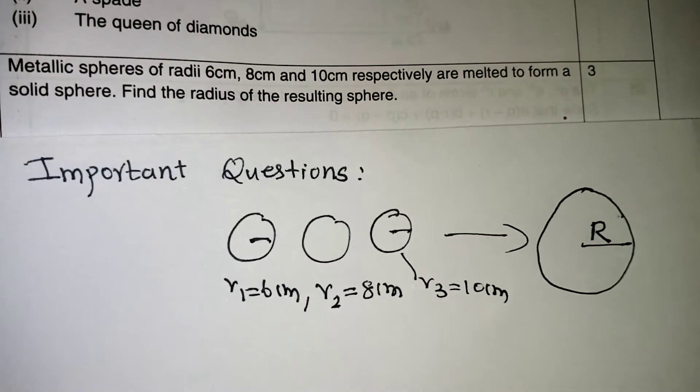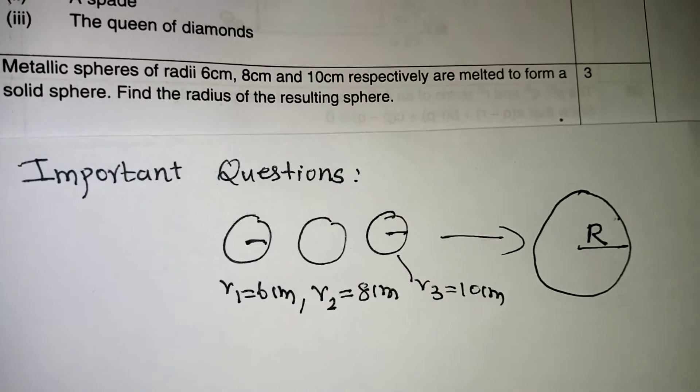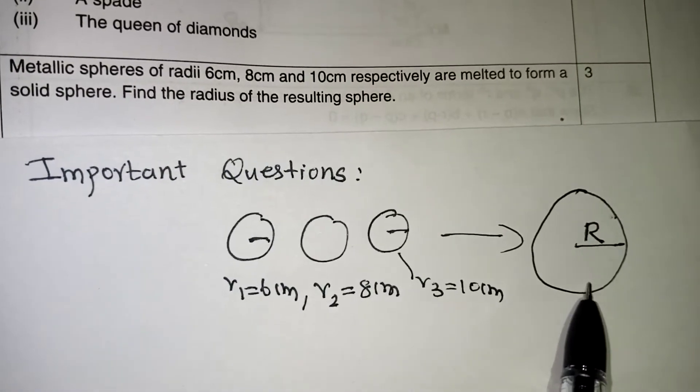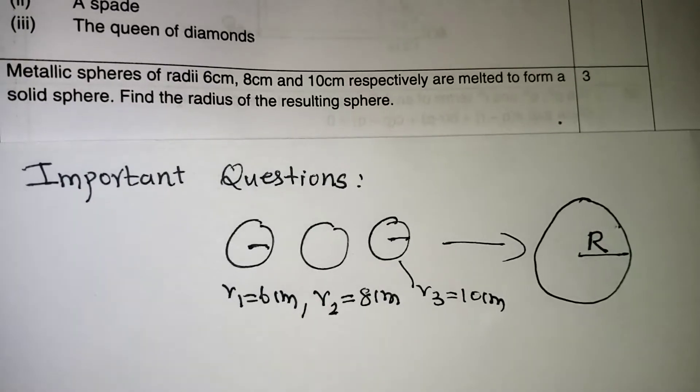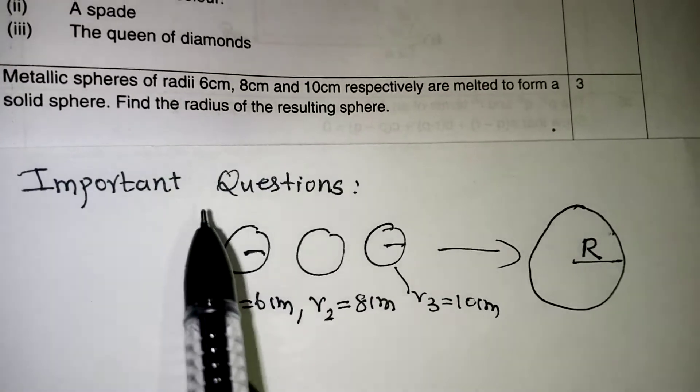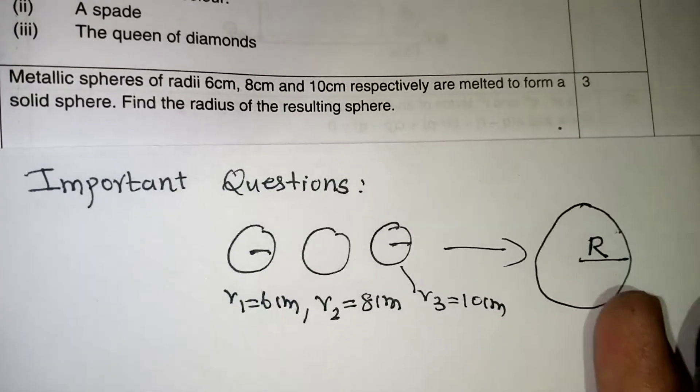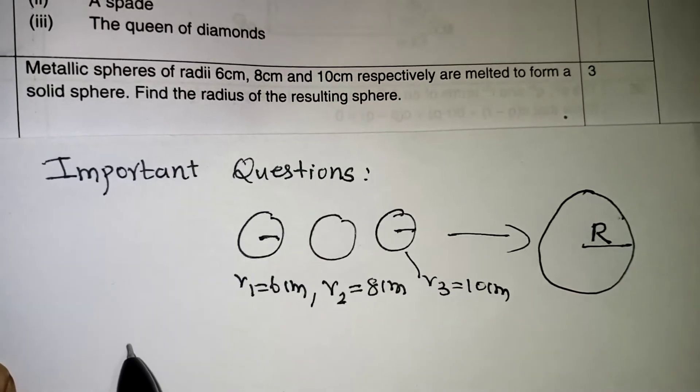So here we need to understand which formula we must use. Definitely volume of all the three small spheres will be equal to volume of the single sphere. The capacity of the balls will be same. Capacity of all three balls together will be equal to capacity of the big ball.